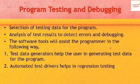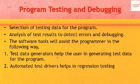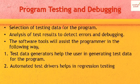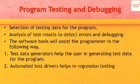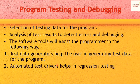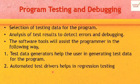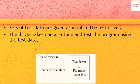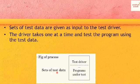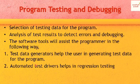Software tools will assist the programmer in the following ways. Test data generators help the user in generating test data for the program. Tools such as the test data generator will generate the test data. For testing, we can use automatic test drivers, which help in regression testing. A set of test data is generated by test data generators.